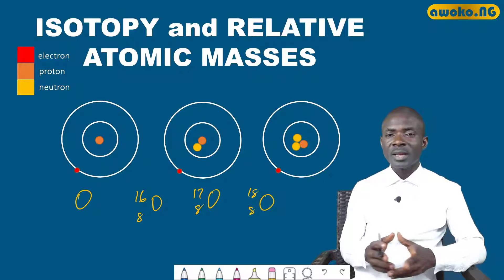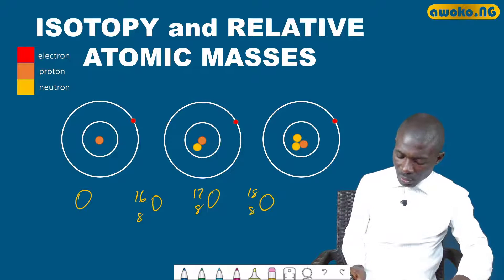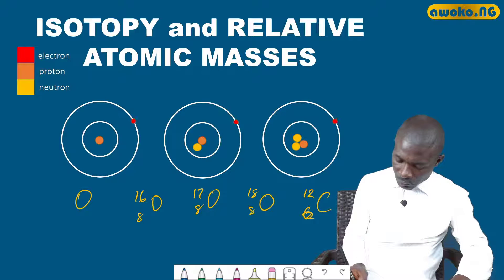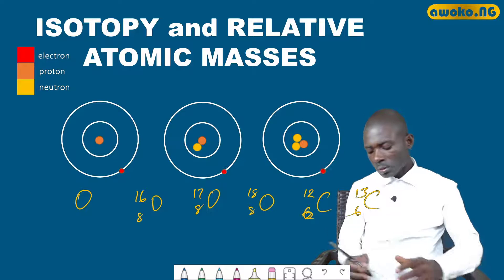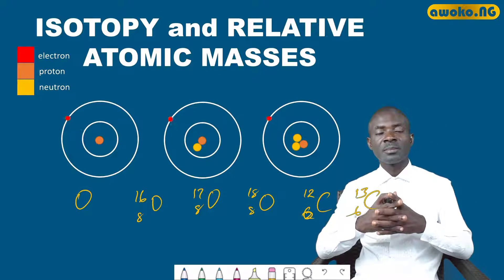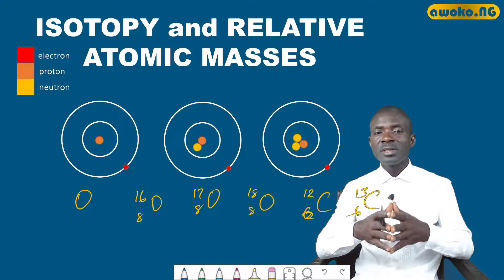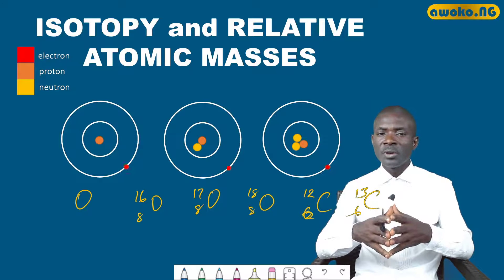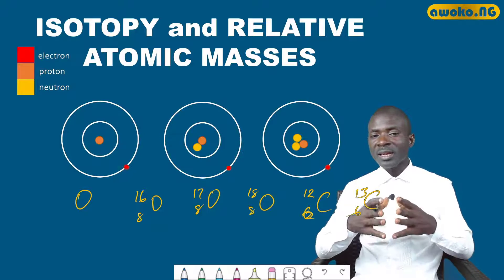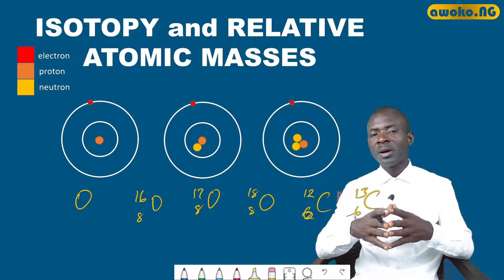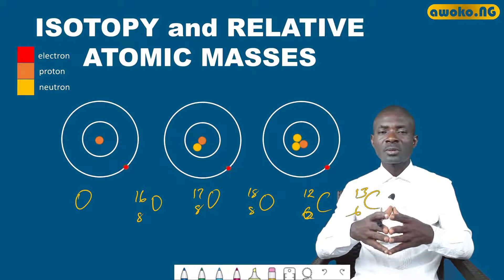Carbon also exhibits isotopy, with two major isotopes having mass numbers of 12 and 13. Subtracting the number of protons from the mass number reveals different neutron counts. In summary: mass number equals neutrons plus protons; neutrons equals mass number minus protons; and protons equals mass number minus neutrons.